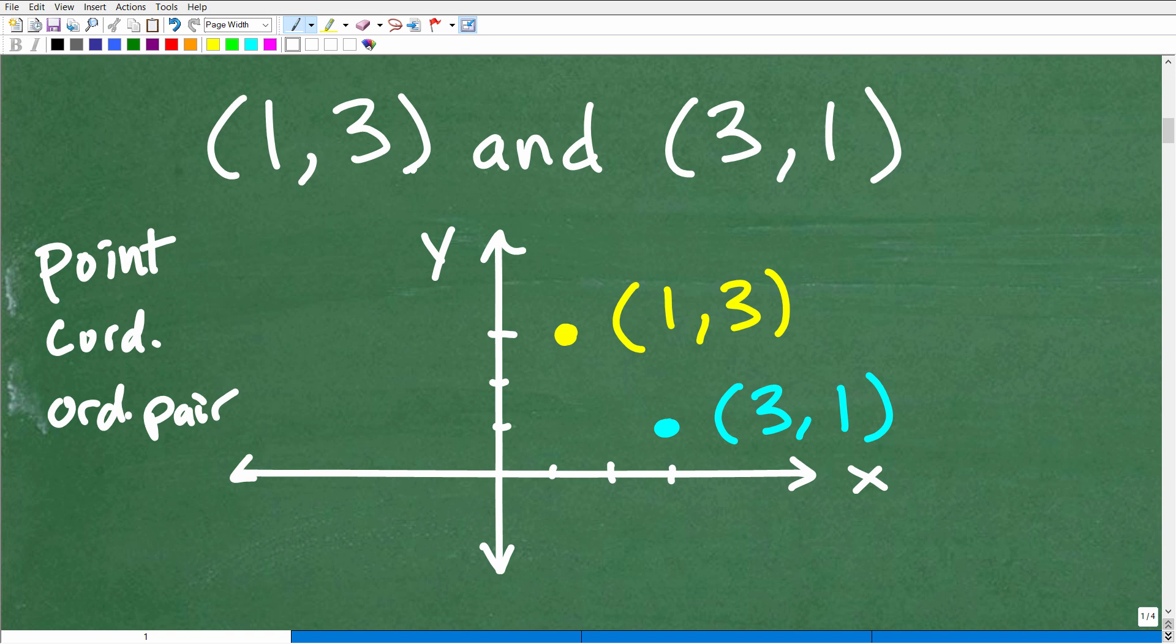So basically, this 1,3 and 3,1, these are effectively addresses, right? Like if you live on some particular, wherever you live, you have an address, right? Maybe you live on 1,2,3 Magnolia Street. Well, that is your address, right? So the location or the address of these points, we use a kind of location system, and that is an ordered pair. So effectively, an ordered pair is we're going to have a pair of values, and they're going to have a specific order, okay?